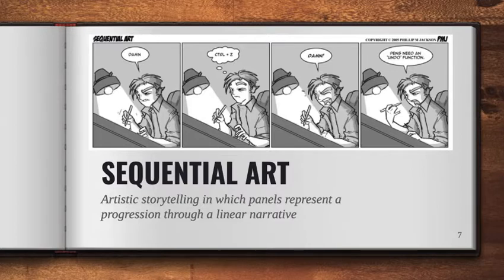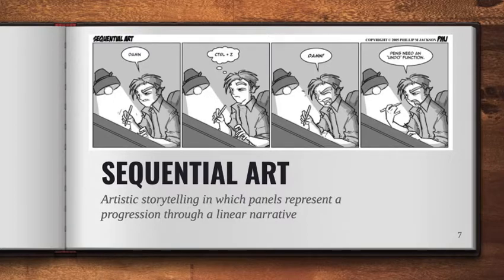In this example, we understand these panels as happening in order from left to right. First, the artist is drawing and says 'damn' — we infer he's made a mistake. Next panel, he thinks 'Control Z,' the keyboard command for undo. In the third panel he says 'damn' again, expressing frustration. Finally, he mutters that pens need an undo function. These events happen in a particular order, and reading them left to right matters to our interpretation. Sequential art is a term we can use to talk about comics or graphic novels.